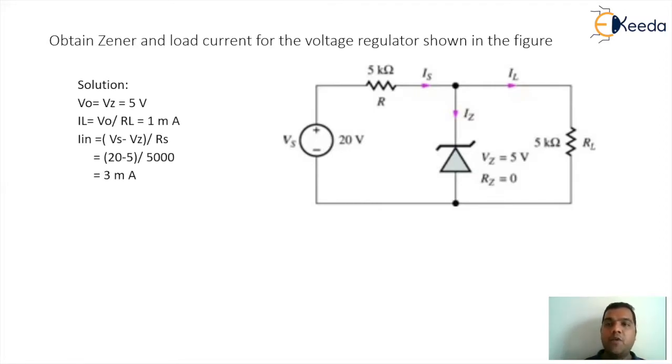The value of your input current comes out to be 3 milliampere. Now the value of Zener current is going to be a subtraction of the IS current minus the load current. So IS is 3 milliampere and IL is 1 milliampere. The difference of both is 2 milliampere. So the Zener current will be 2 milliampere and the load current will be 1 milliampere. Next question.